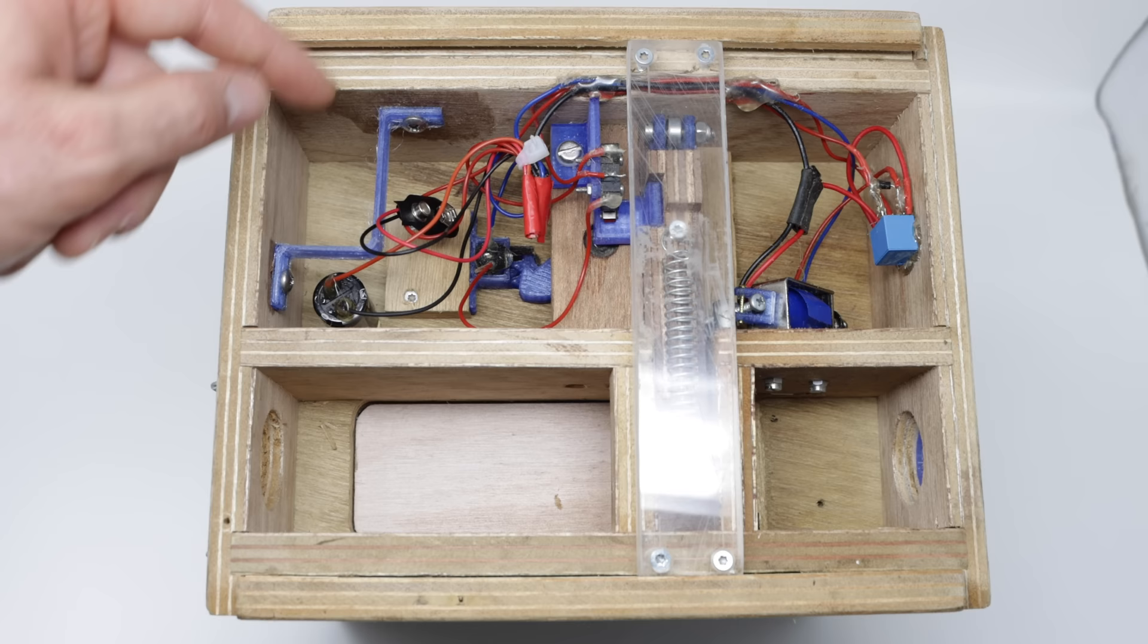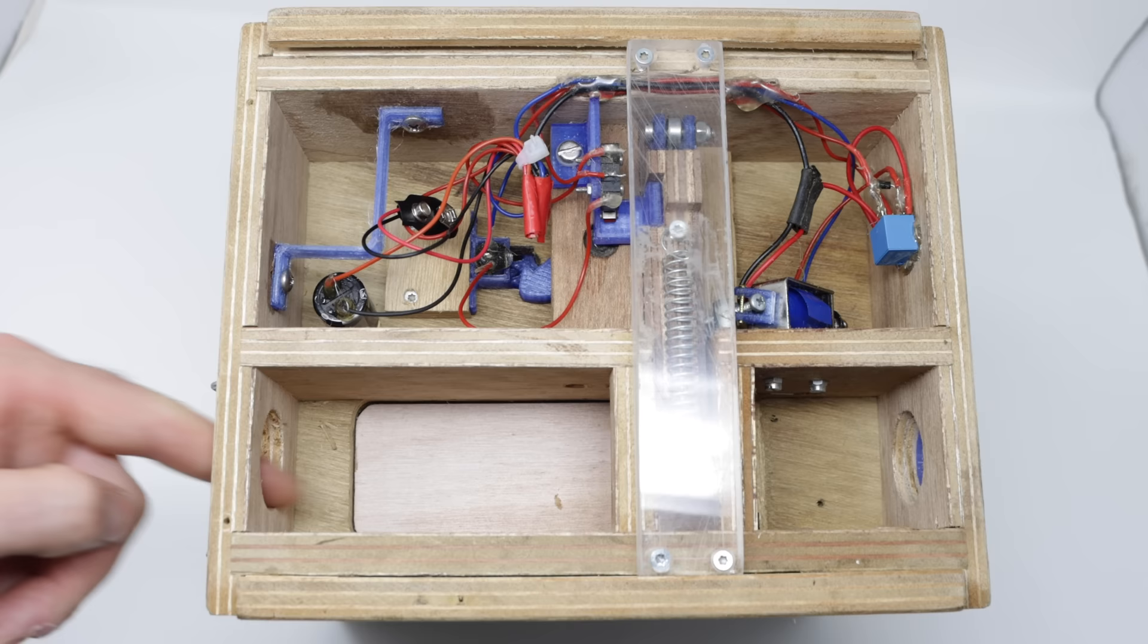The top of the trap is separated by different compartments. On this side we have the electronics, the wires, motors, solenoid, the setting mechanism, and the battery pack. And on this side is the kill chamber.